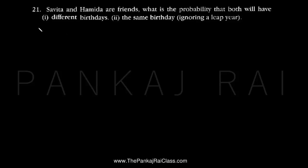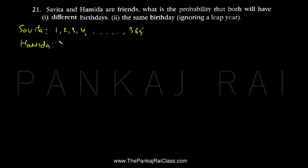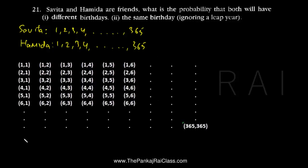Now let us see what about the sample space. Talking about Savita, she may have a birthday on any day of the year — it might be the first day, the second day, the third day, the fourth day, or maybe even the 365th day of the year. Similarly, Hamida may also have a birthday on any day of the year: the first day, the second day, the third day, the fourth day, or similarly the 365th day. Now if I try to think of the sample space of the combination of their birthdays, it looks the same as the sample space when we throw two dice. So let me make up the sample space.